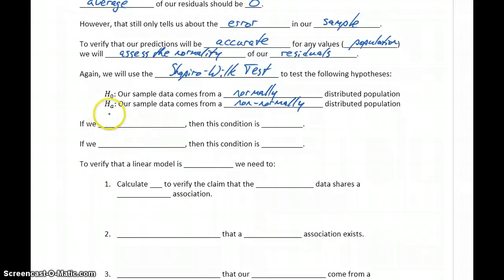In this case, if we fail to reject our null hypothesis, then this condition about the normality of our residuals is met. But if we reject the null hypothesis, we're concluding the residuals are not normally distributed, and the condition is not met. So that condition would fail. At that point, we would again have a conclusion that our model is not valid.